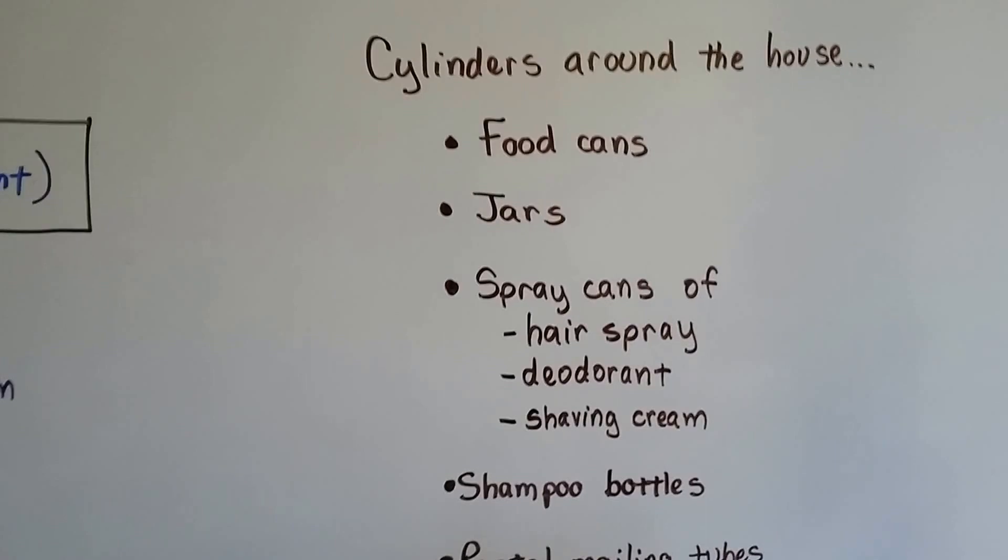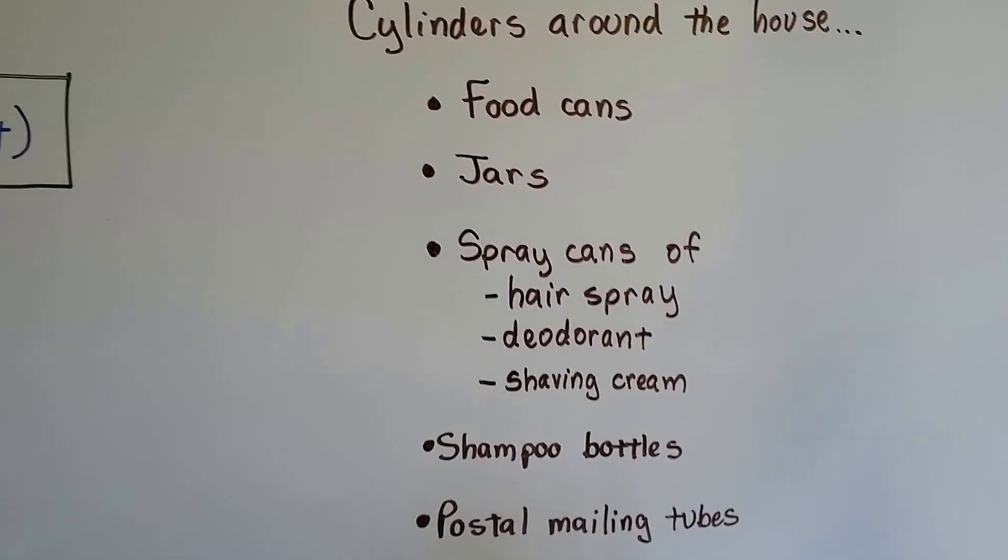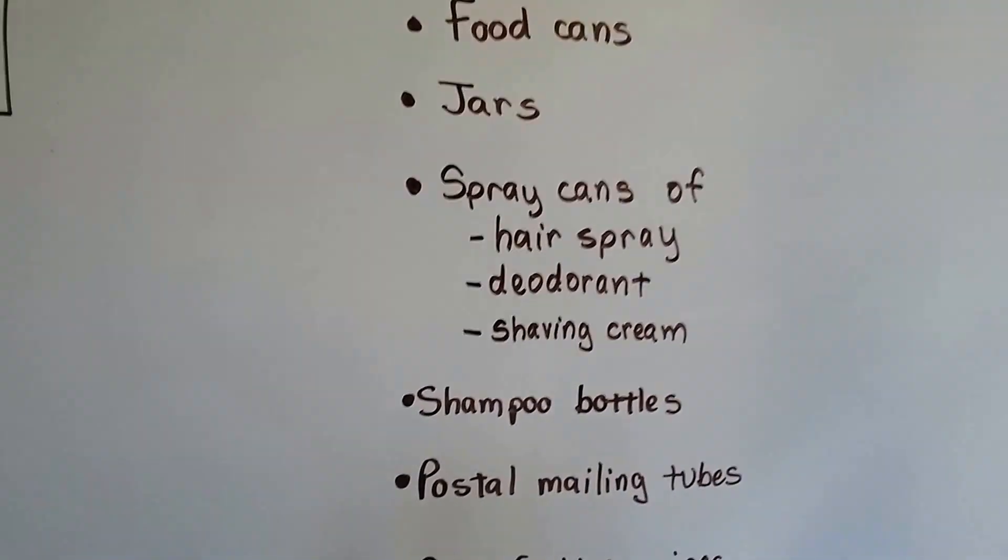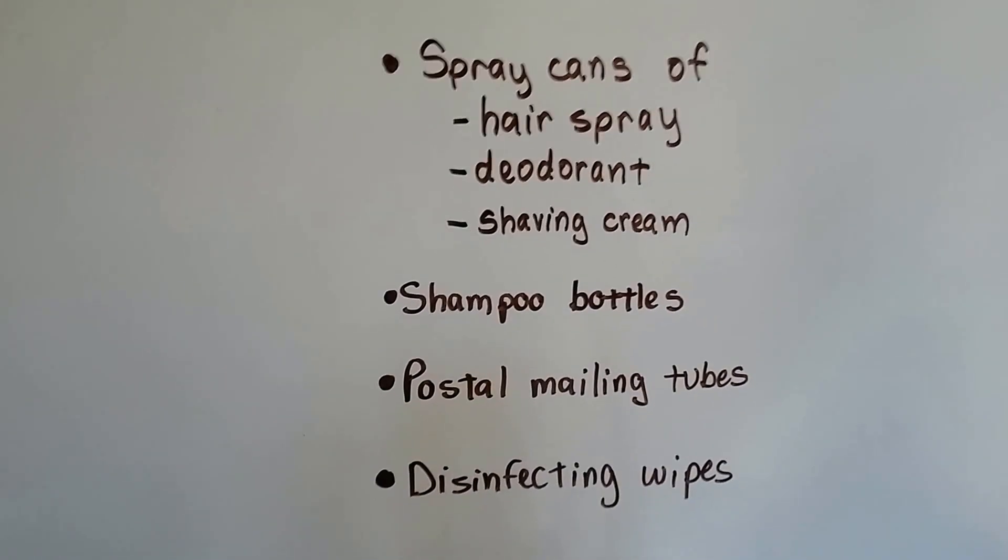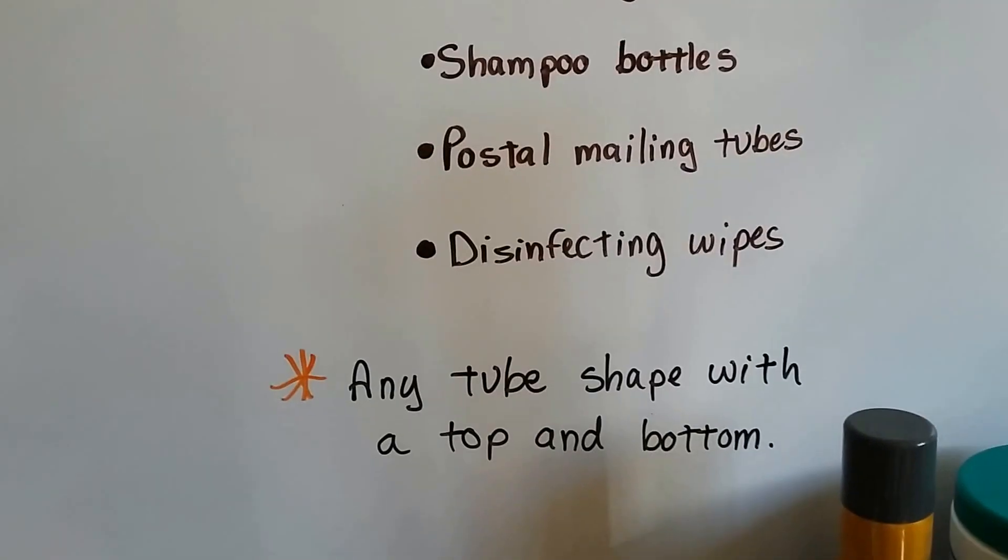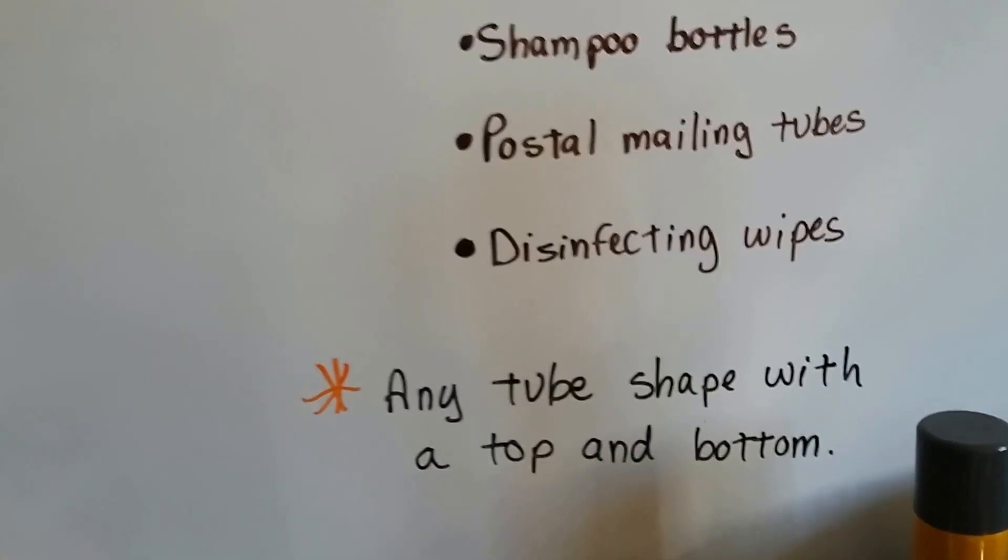Now, there's cylinders all around your house. There's food cans, jars, spray cans of hairspray, deodorant, shaving cream, shampoo bottles, postal mailing tubes, even disinfecting wipes. Any tube shape with a top and a bottom.